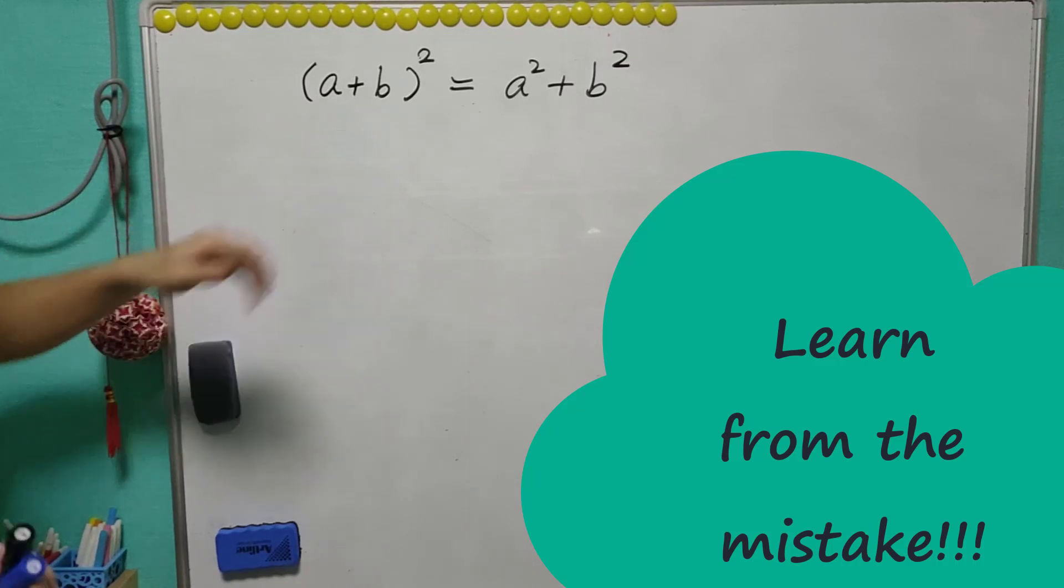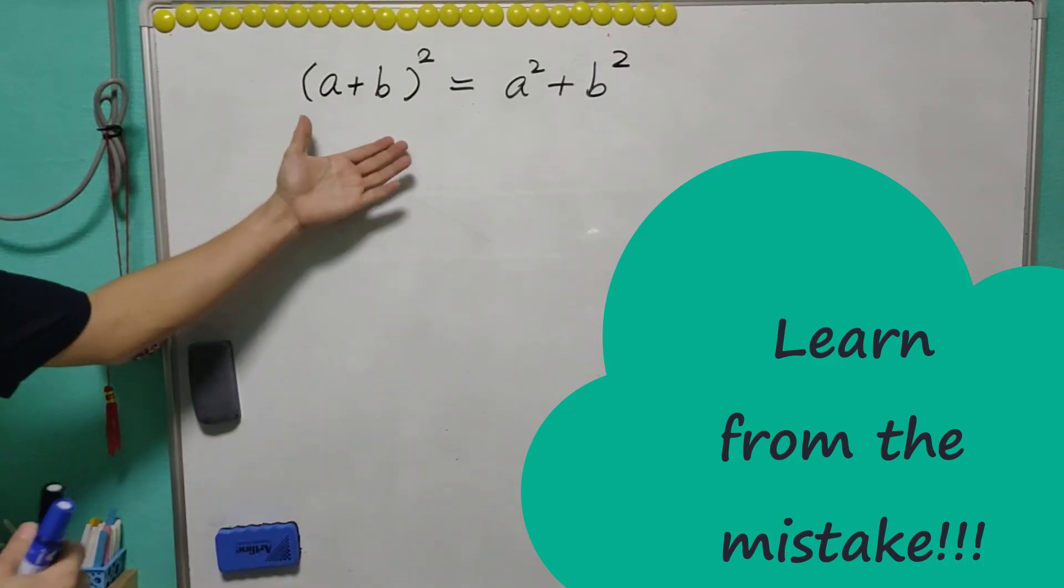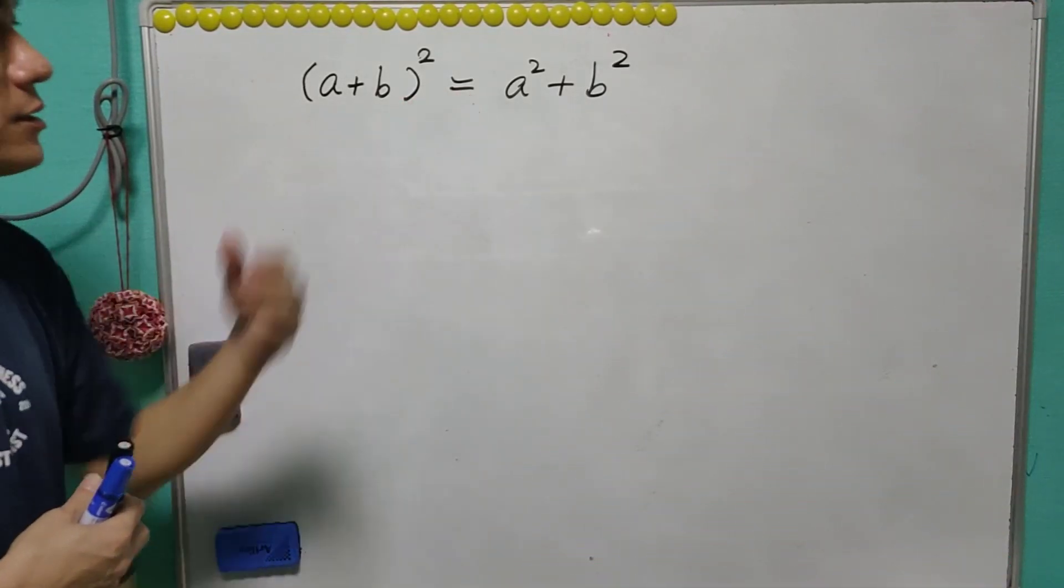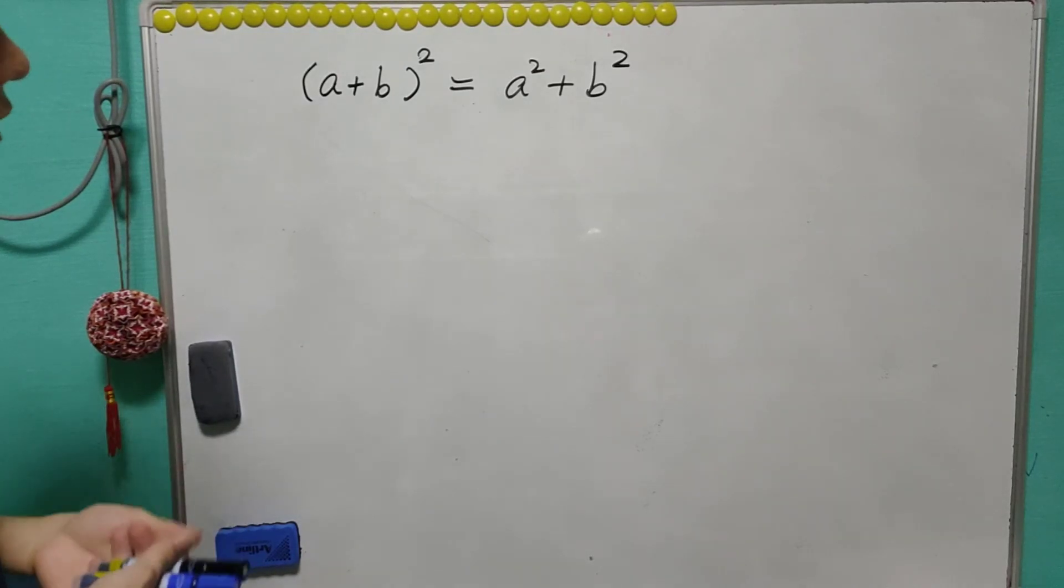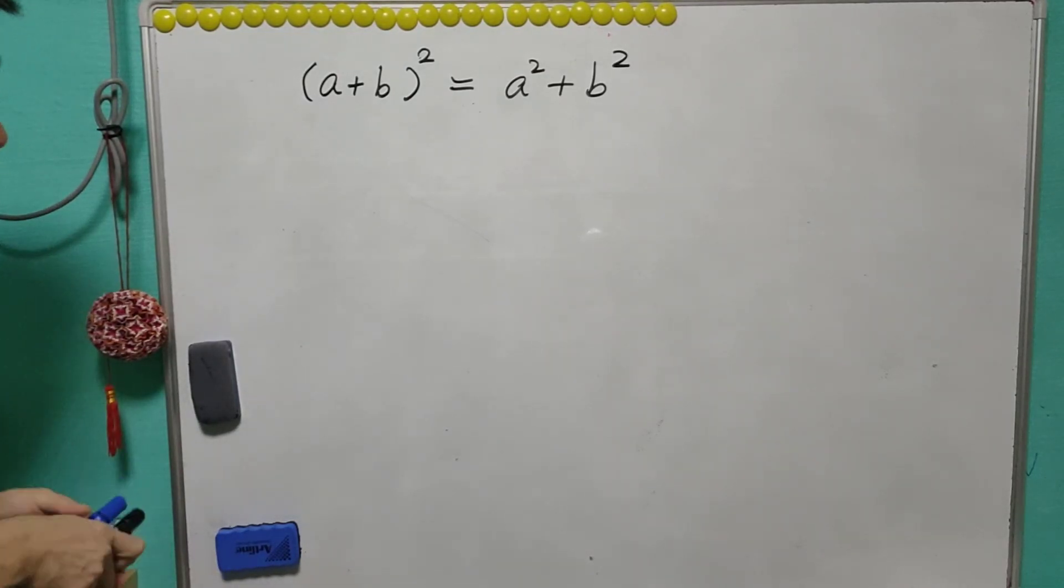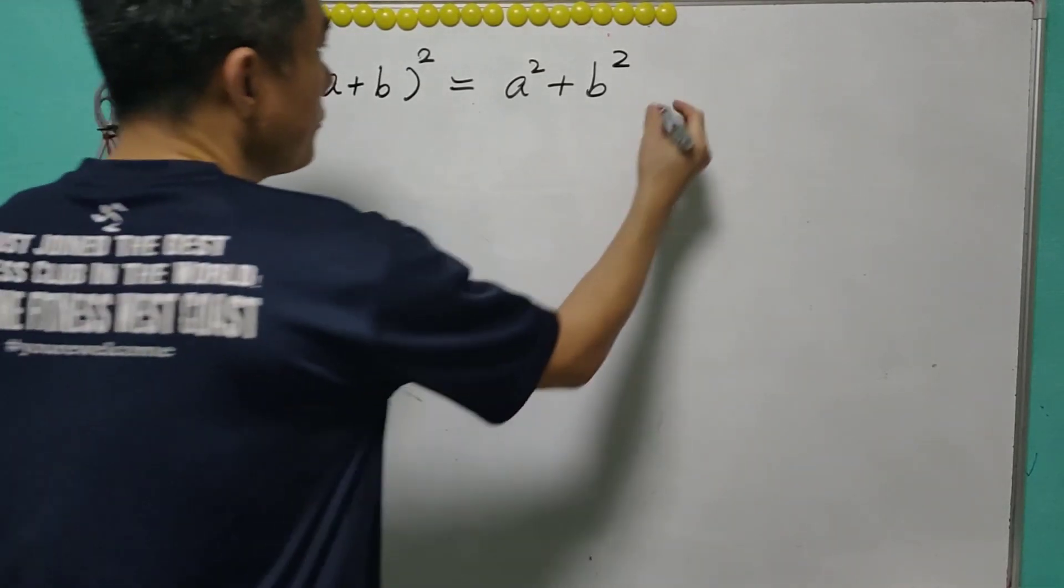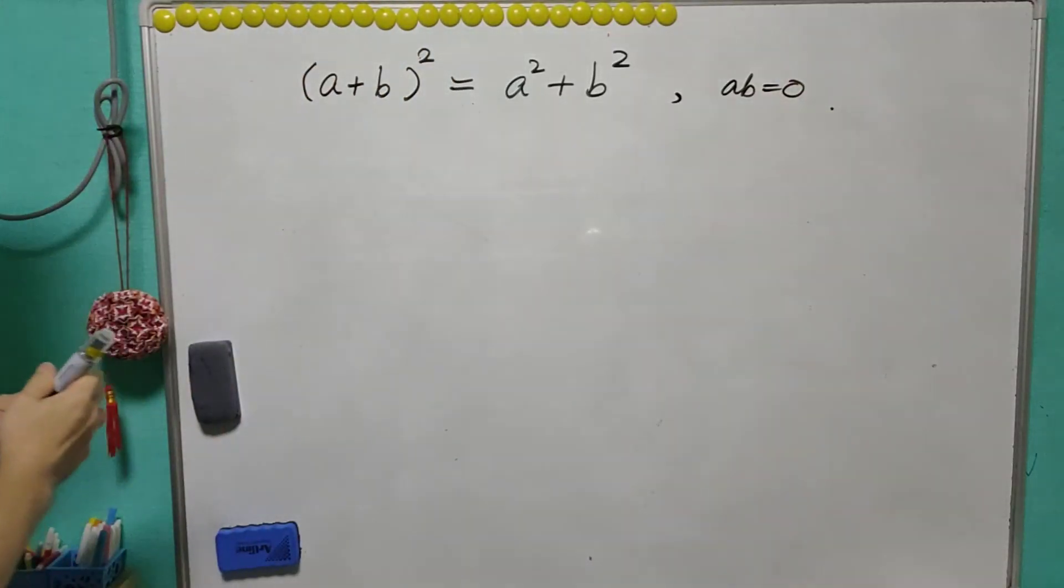This is a common mistake when you first learn algebra. The square of a plus b not necessarily equals to the square of a plus square of b. This is only true if either a or b equals zero.